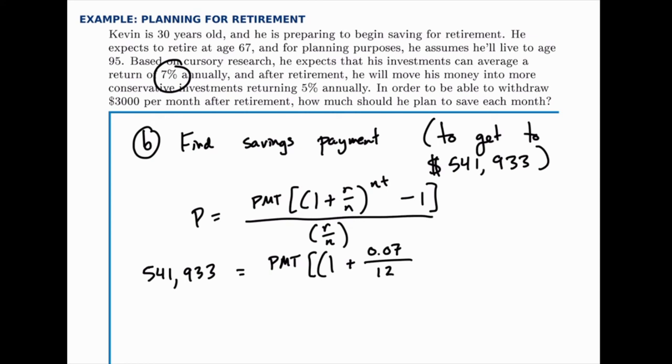Again, his savings payments are monthly, and they compound monthly. And then for T, we need to know how long he's going to be doing this process of saving. Now, if he's 30 years old today, and he's going to save until retirement at age 67, that's a total of 37 years. So T is 37.